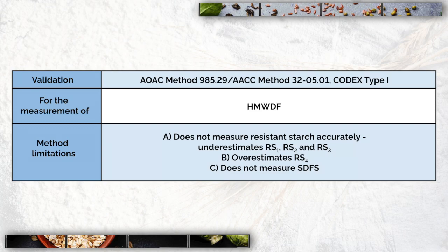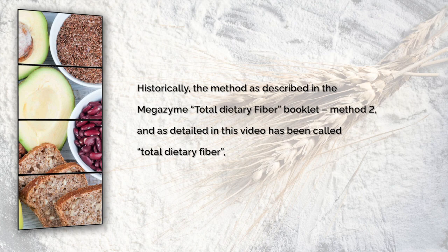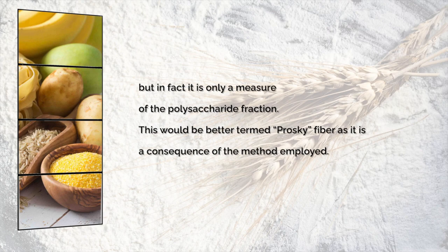This method was developed as the result of research by several laboratories in Europe and America. The basic aim of the method was to measure high molecular weight non-digestible polysaccharides such as cellulose, beta-glucan, arabinoxylan, mannans, pectins, etc. Historically, the method as described in the Megazyme Total Dietary Fibre booklet, Method 2, has been called Total Dietary Fibre, but in fact it is only a measure of the polysaccharide fraction. This would be better termed Prosky fibre, as it is a consequence of the method employed.